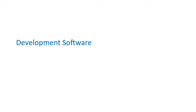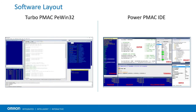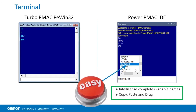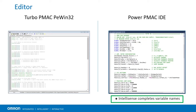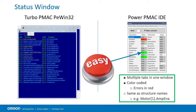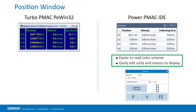In Turbo PMAC, PEWIN32 is used for commissioning your system. Similarly, the Power PMAC IDE is used to commission your system in Power PMAC. Both software packages have a similar layout and are composed of similar tools. The Terminal still allows commands and settings to be entered manually, and now has IntelliSense to assist in finding PMAC structure element names. The Editor window still allows you to edit code meant to be downloaded to PMAC. The Status window now has multiple tabs for motor, coordinate, global, and macro status elements, as well as color coding. Good status values are shown in green and errors are shown in red. The Position window can now show position in engineering units such as millimeters or degrees.